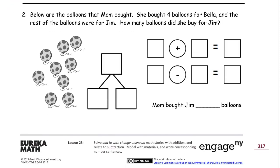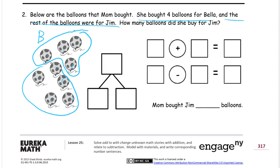Number two. Below are the balloons that Mom bought. She bought four balloons for Bella, and the rest of the balloons were for Jim. How many balloons did she buy for Jim? We have a picture of all the balloons — one, two, three, four, five, six, seven, eight, nine. There are nine balloons. Four of these are Bella's, so we'll circle four of them. These are Bella's balloons — B. And the rest of them were for Jim — J.